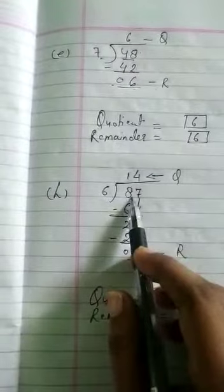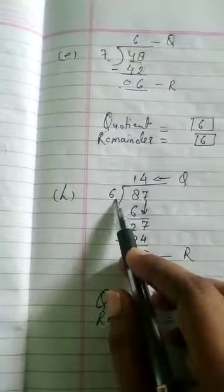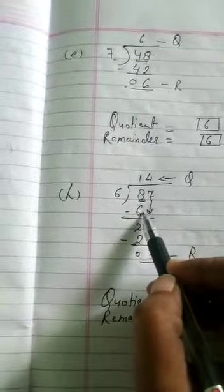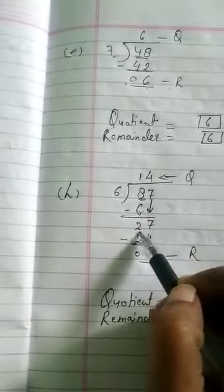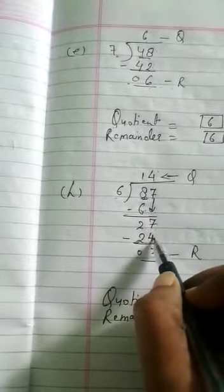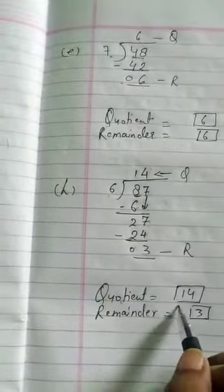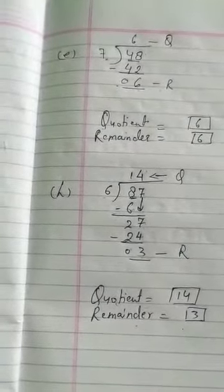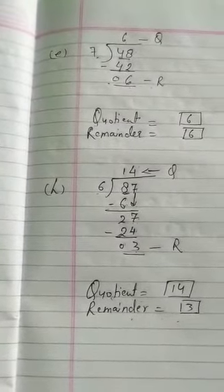Question H, we have to divide 87 by 6. 8 is greater than 6, that's why we take 1 digit only. 6 ones are 6. 8 minus 6 is 2. 7 will come down, it will be 27. 6 fours are 24. 7 minus 4 is 3, 2 minus 2 is 0. Quotient is equal to 14, remainder is equal to 3.